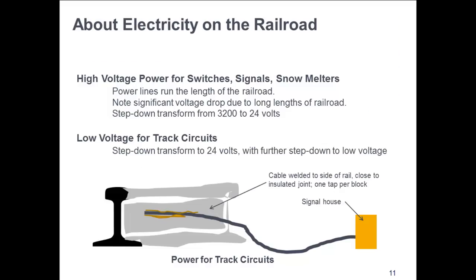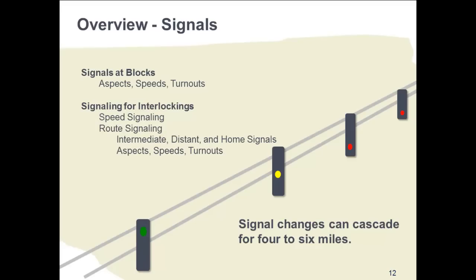One other piece to cover before the signals is electricity on the railroad and how the power gets to the signals. There is one power source which typically runs along the railroad. Step-down transformers provide power at the appropriate voltage for various uses. The railroad operates in places where local power is not readily available, which is why they have a power source running along the tracks. Higher voltage power is provided to switches, signals, and snowmelters. Lower voltage power is provided to the track circuits. The power source enters a signal house that may serve multiple track circuits, connected by cable welded to the side of the rail near the insulated joint between blocks.